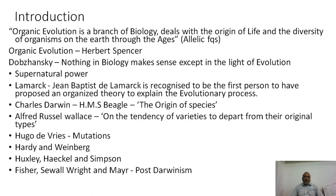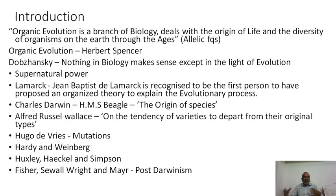The first scientist recognized to have proposed an organized theory to explain the evolutionary process was Jean-Baptiste de Lamarck. He explained his Lamarckism in a simple and most convincing manner. He was the first person to explain the entire process of evolution using only three principles, though it is not true for all cases and faced a lot of criticism.